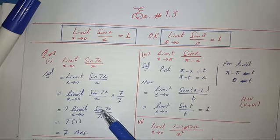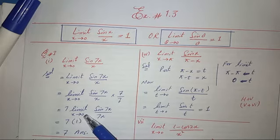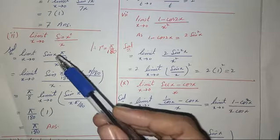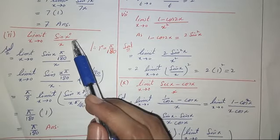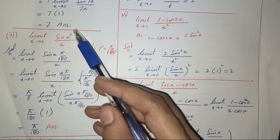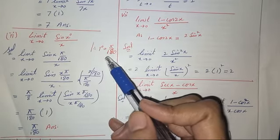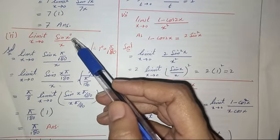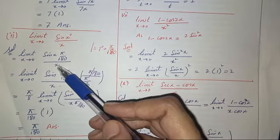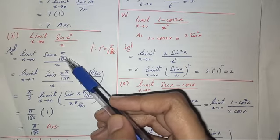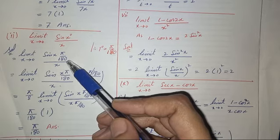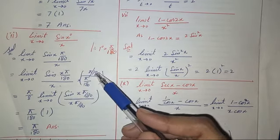Remember that when you have 7x, you can write the limit as 7x tends to 0. Now for the second part: limit x tends to 0 of sine x° over x, where x is in degrees. Since 1 degree equals pi over 180, we rewrite sine x° as sine of x times pi over 180, with x remaining in the denominator.